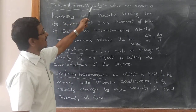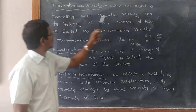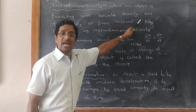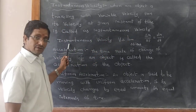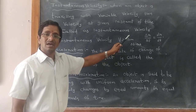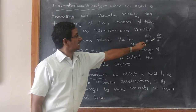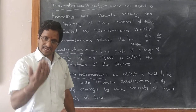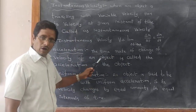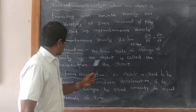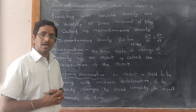Now, Instantaneous Velocity on the board. When an object is moving with variable velocity, the velocity at a given instant of time is called instantaneous velocity. Therefore, instantaneous velocity v equals limit as Δt tends to 0 of Δr by Δt. Next, Acceleration: the time rate of change of velocity of an object is called the acceleration of the object. It is a vector quantity. The unit is meter per second squared.